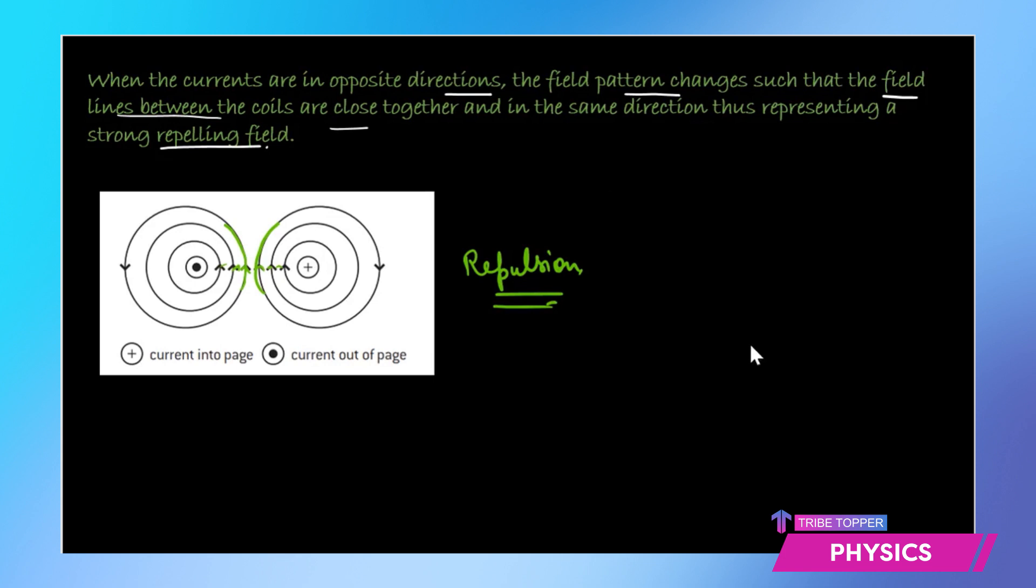You just have to remember that when there are two current-carrying wires in the same direction, they attract each other. If they are placed parallel and carry current in opposite directions, they repel each other.